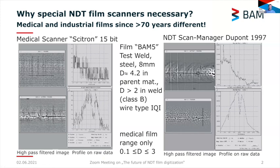Today I want to speak about the problems you have when you digitize industrial X-ray films. The film itself looks very similar to a medical one, but if you scan an NDT film — here I used our famous test specimen BW5 with 8mm of steel containing lots of cracks and indications — with a medical film scanner, you get poor results and don't see much. NDT films are fundamentally different from medical films.